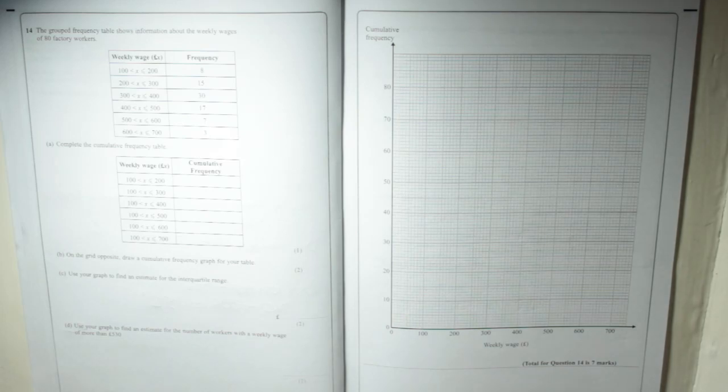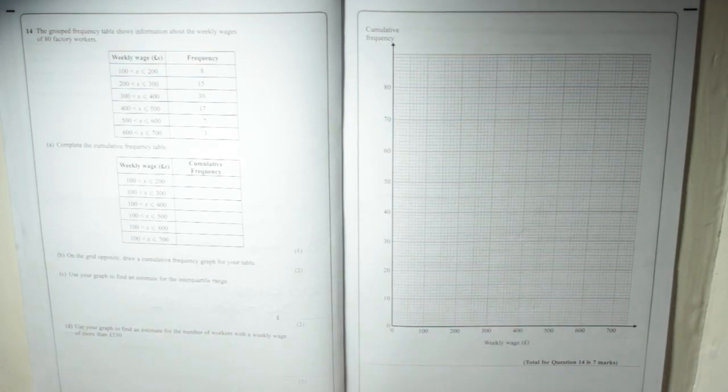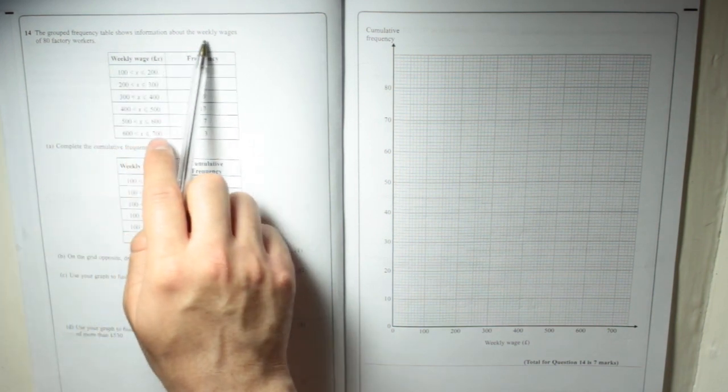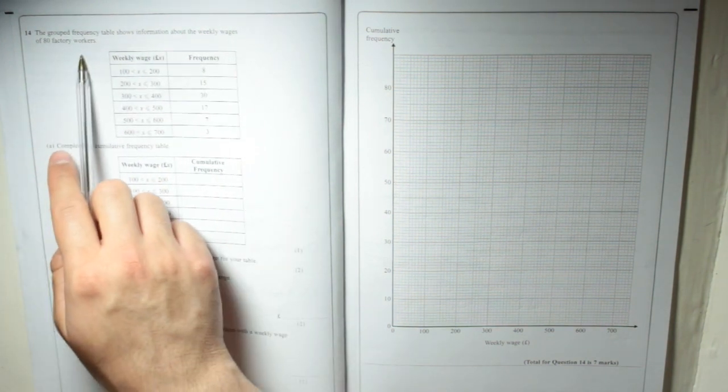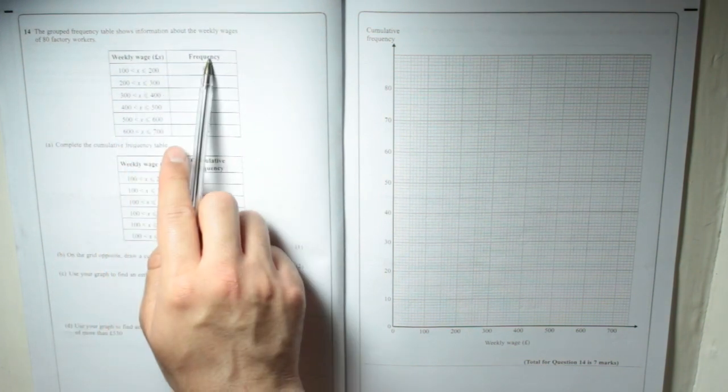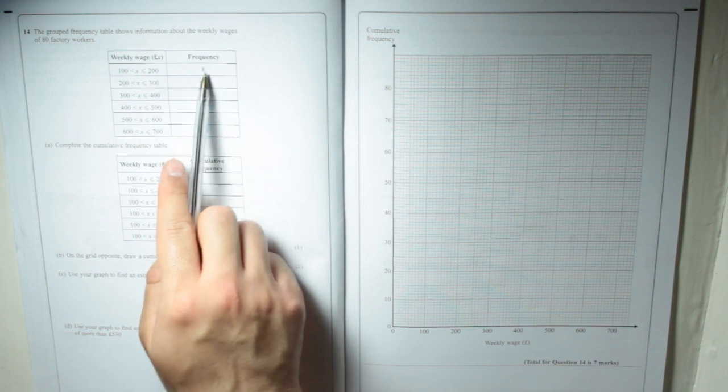Okay, here we have a cumulative frequency question. The grouped frequency table shows information about the weekly wages of 80 factory workers. So you've got your weekly wage and your frequency, frequency remember means how many.